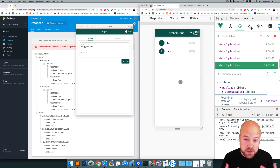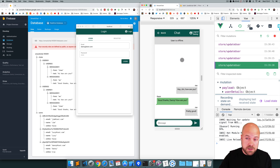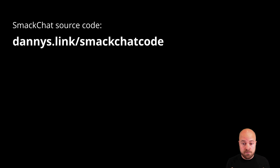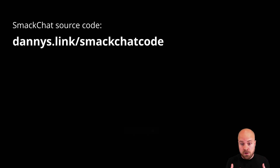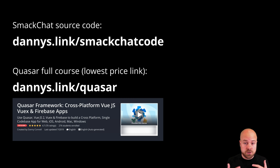I think we're pretty much done with this users page. In the next video, we're going to grab all of the messages. When a user clicks on another user, we're going to display those messages on the chat page. Make sure you subscribe, don't forget to leave a comment. If you want to grab the source code for this app, go to dannys.link/smack-chat-code. And if you want to learn all of the basics of Quasar framework, Vue.js, Vuex and Firebase, check out the full course at dannys.link/quasar.